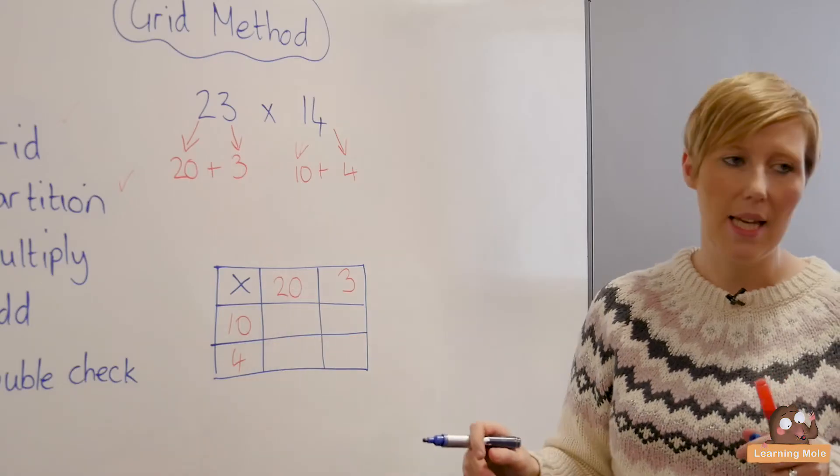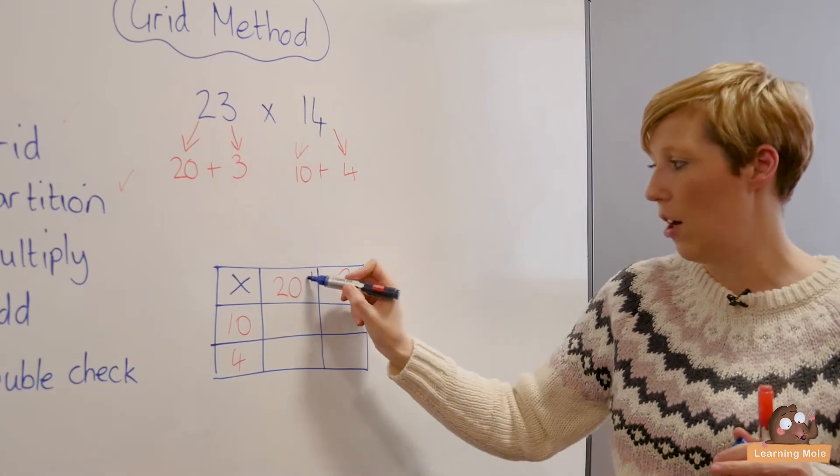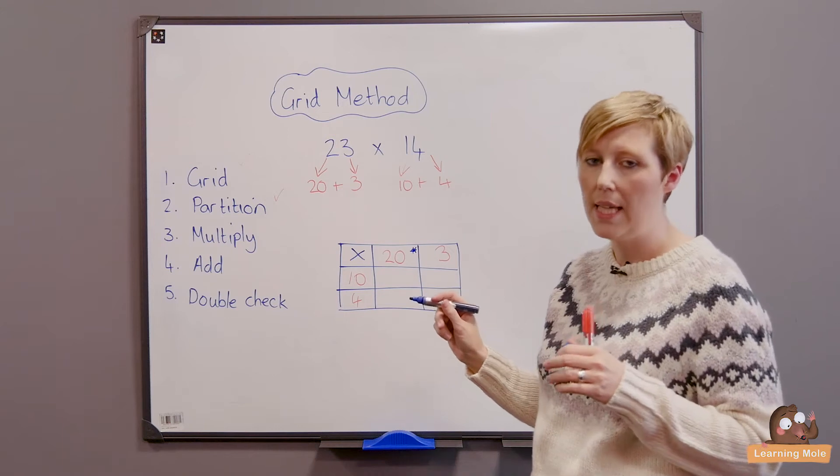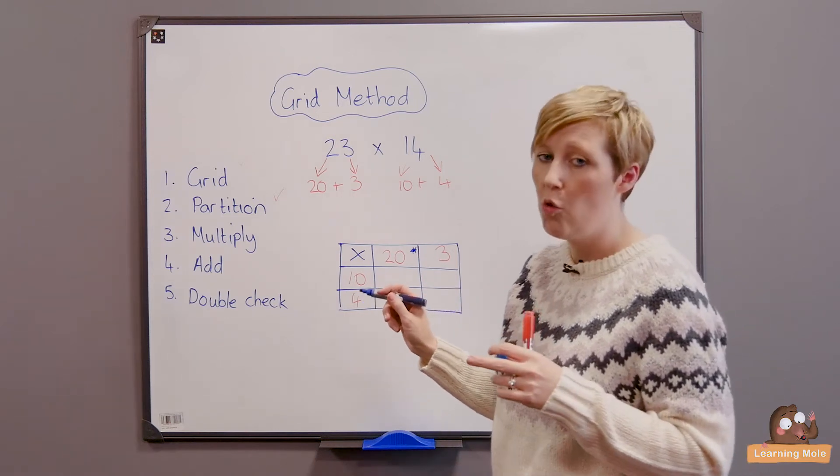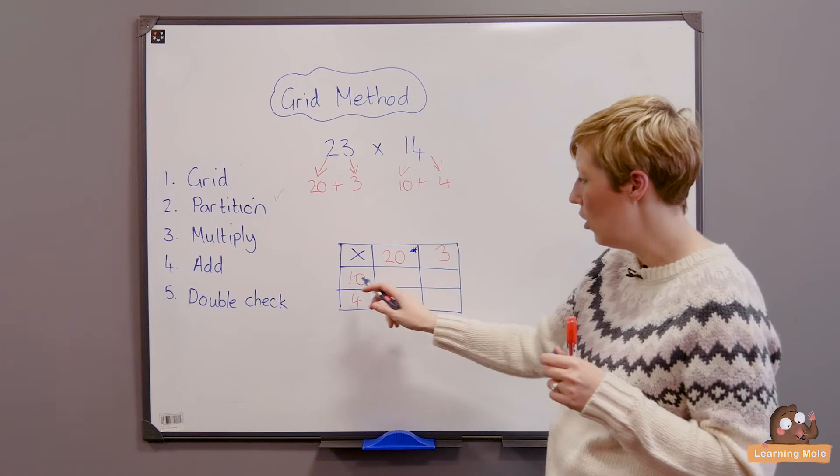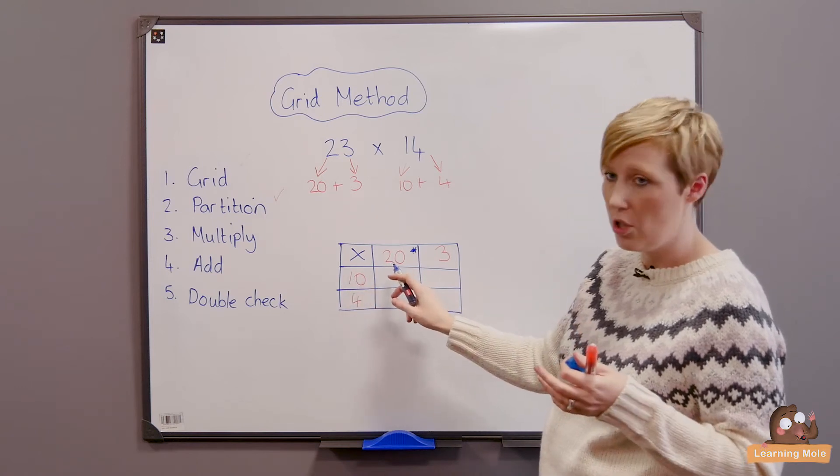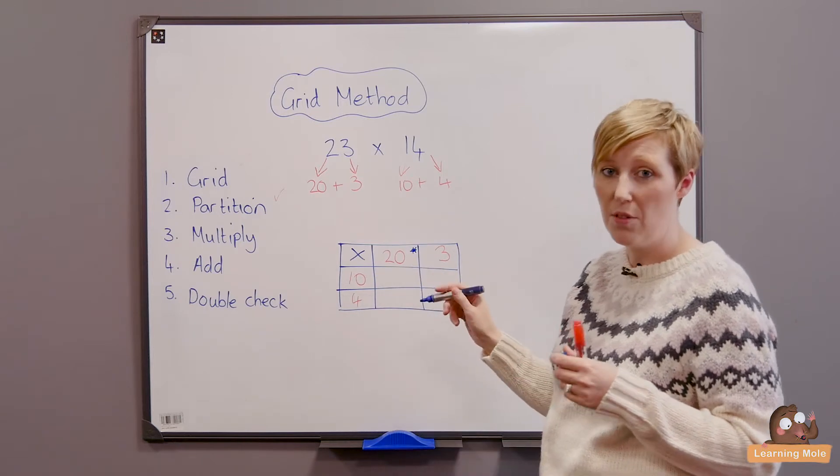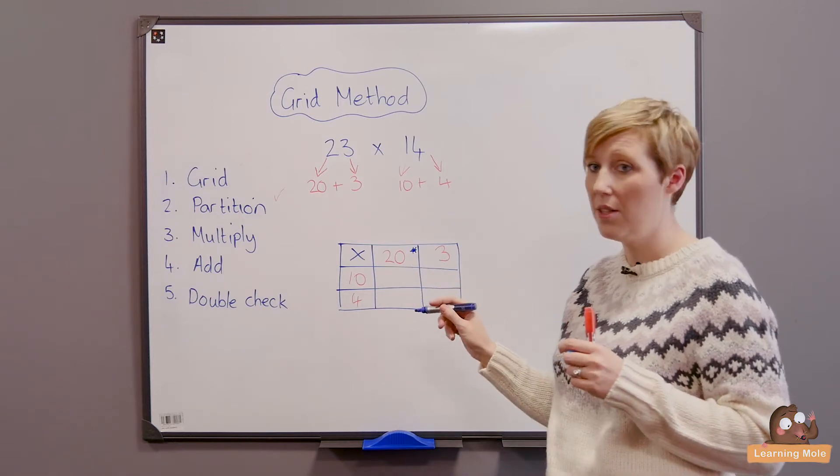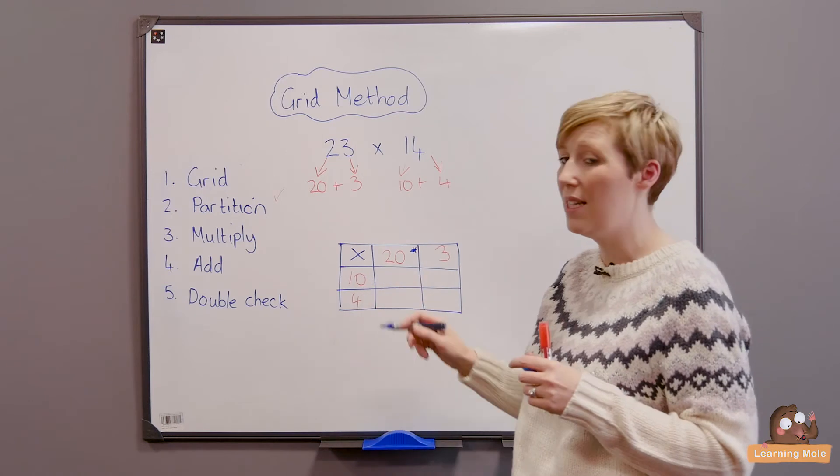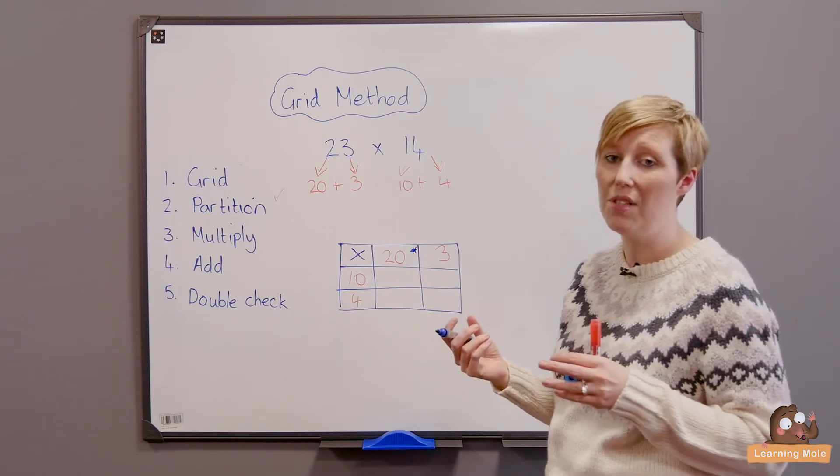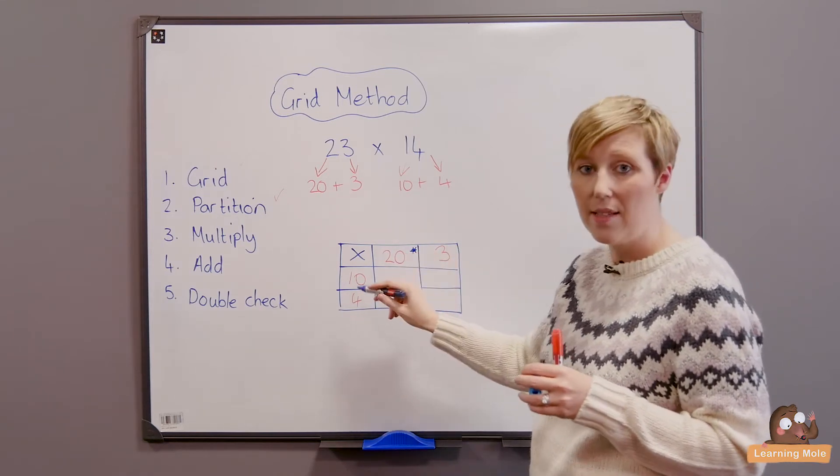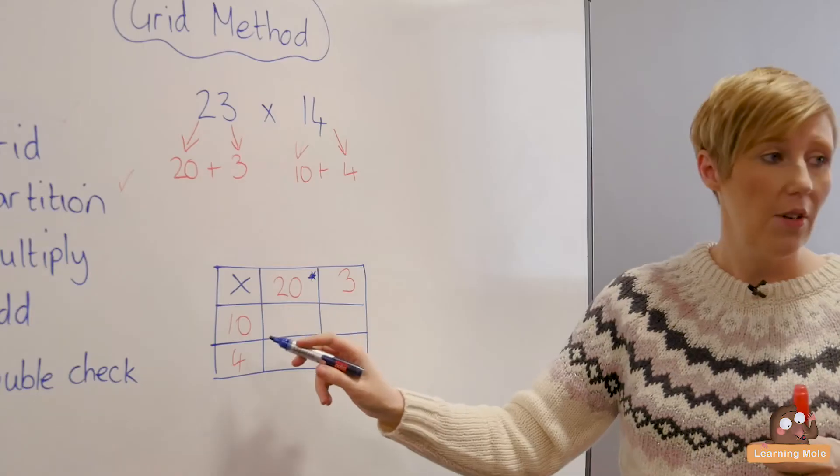We do our 10 times 20, bearing in mind our double-checking that we're actually multiplying the multiples of 10 rather than just 1 times 2. So we've got our 1 times 2, which we already know is 2, and then we've got our zeros. We're looking at the amount of zeros there to help us. I would always point that out to the children: you've got a 0 here and you've got a 0 here, so that means you actually need to have two zeros in your number because this is a multiple of 10 and this is a multiple of 10. So I've got 10 times 20, which is 200. I've got 10 times 3, which is 30.